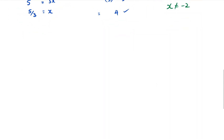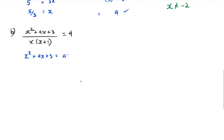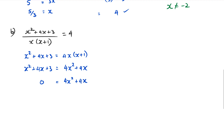Now let's look at question two using method two. We get x² + 4x + 3 = 4 · x(x + 1). Expanding the right side gives 4x² + 4x. Rearranging all terms to one side: 4x² + 4x − x² − 4x − 3, which simplifies to 3x² − 3.